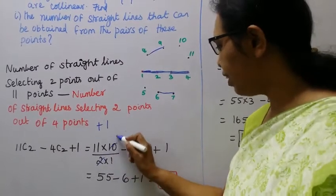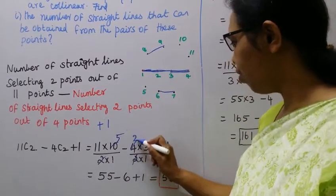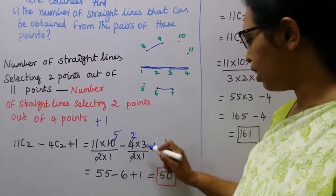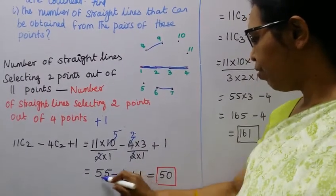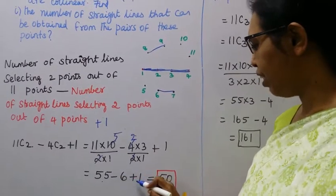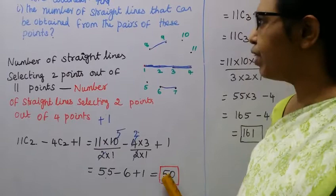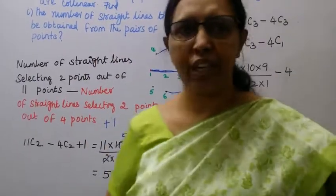Two fives are 10, two twos are 4. 11 fives are 55 minus two threes are 6, plus one. 55 minus 6 is 49. 49 plus one is 50. The first subdivision answer is 50.